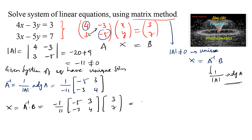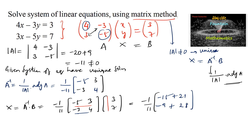Multiplying row with column: negative 5 times 3 is negative 15, plus 7 times 3 is 21; next, negative 3 times 3 is negative 9 and 4 times 7 is 28. This equals negative 1 over 11 times the matrix with entries 21 minus 15 equals 6, and 28 minus 9 equals 19.